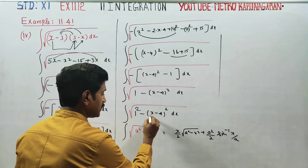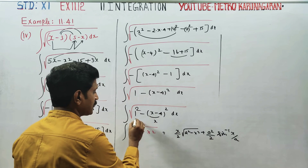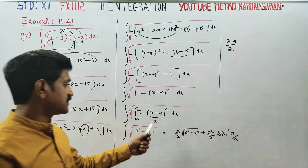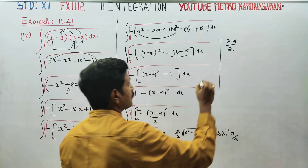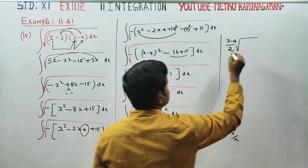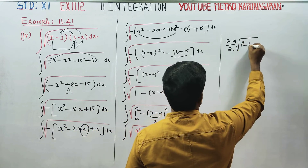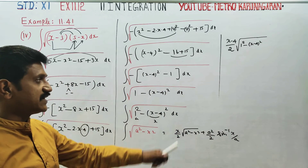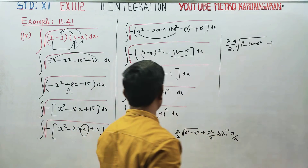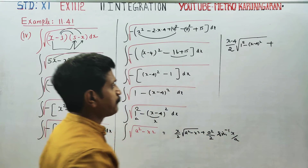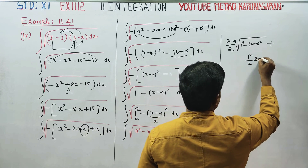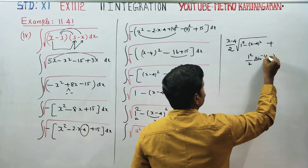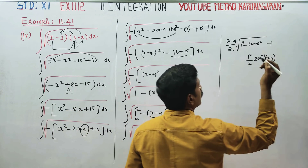Now applying the formula to this sum: x here is (x minus 4), and a equals 1. So it becomes (x minus 4) by 2 times square root of 1 squared minus (x minus 4) squared, plus 1 squared by 2 times sine inverse of (x minus 4) by 1.